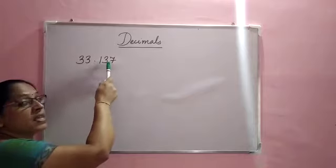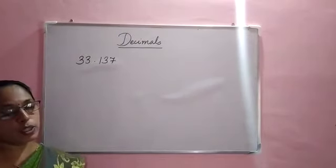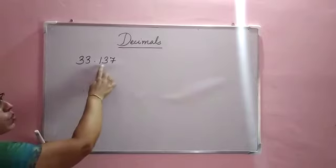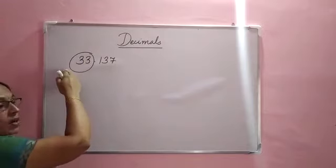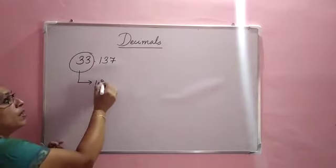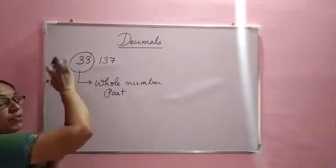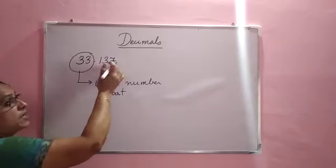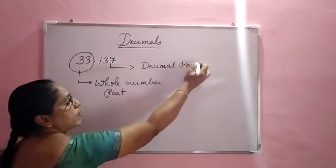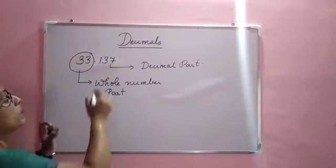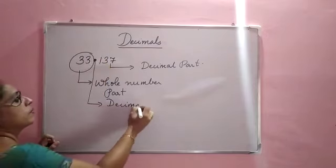33.137. In class 6 you already learned decimals. Just again I am making you aware of a few basic facts. A decimal number has two parts: the part before the decimal point is known as the whole number part, and the part after the decimal point is called the decimal part. That dot in the middle is the decimal point.